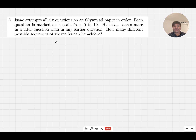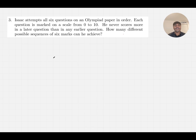Isaac attempts all six questions on an Olympiad paper in order. Each question is marked on a scale from 0 to 10. He never scores more in a later question than in any earlier question. How many different possible sequences of six marks can he achieve?